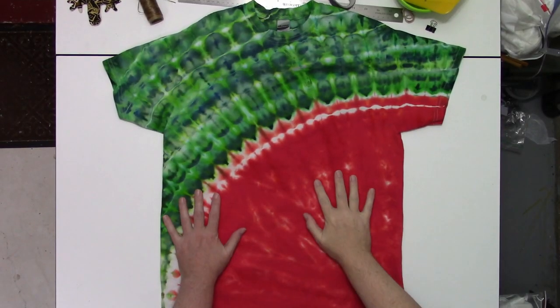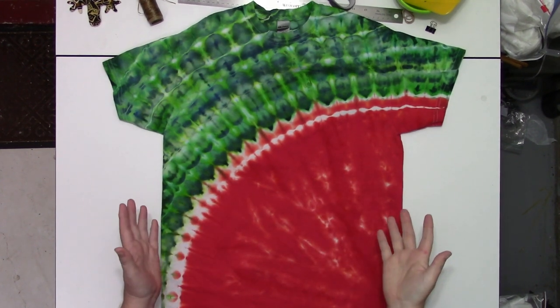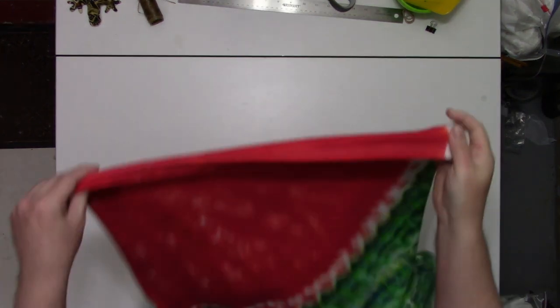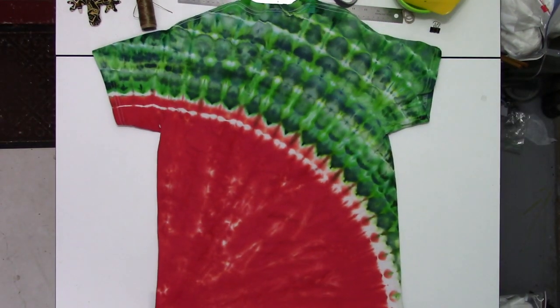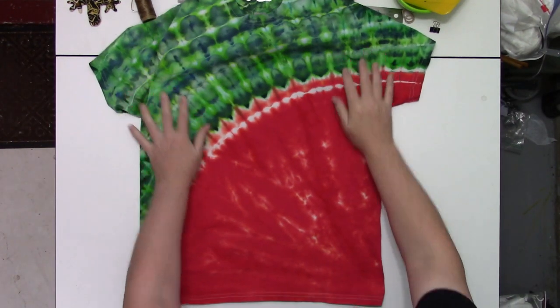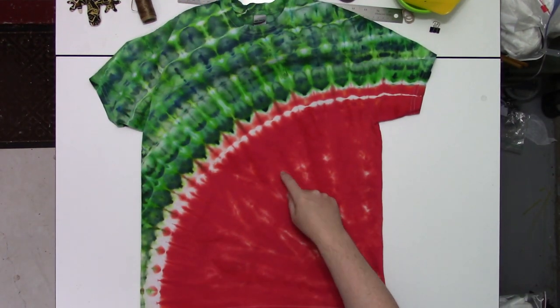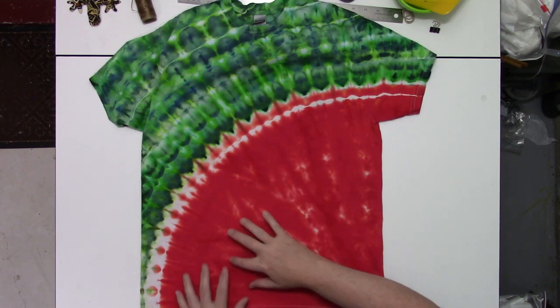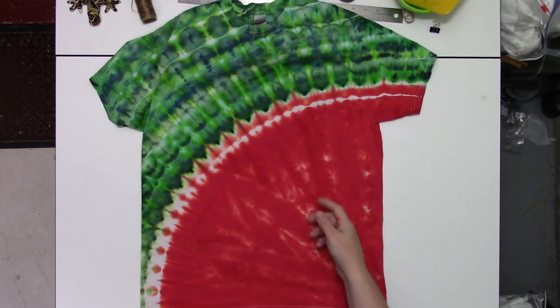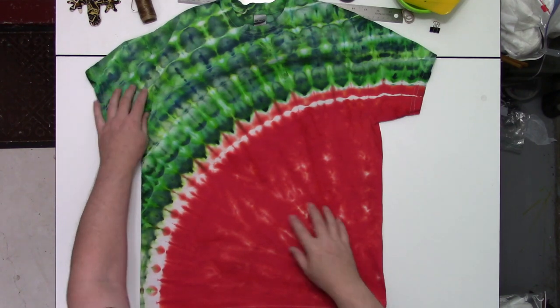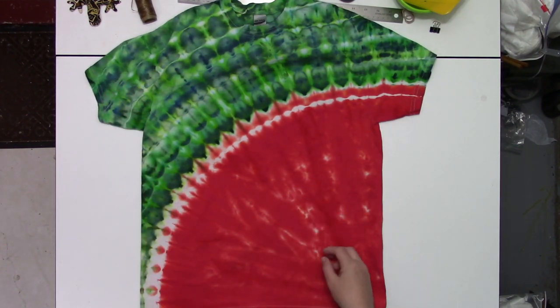All right, so my battery died in the middle of the washout, so here we are. Here's the results, front and back. Now you could come back in with some fabric paint and the corner of a sponge and go in and put a bunch of little seeds, or you could come back in and do the same thing with a thickened black dye and then reprocess it again after sitting there for about 24 hours.